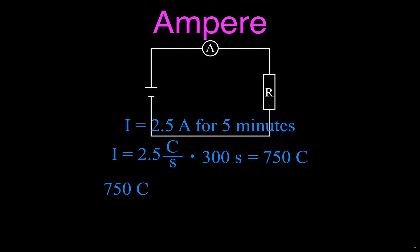Well how many electrons is that? We take the 750, we figured out on the previous slide that's 6.2 times 10 to the 18 electrons per coulomb, and that means that in five minutes, 4.7 times 10 to 21 electrons would flow through that circuit, through that ammeter or through any given point in that circuit since we basically have a series circuit here.